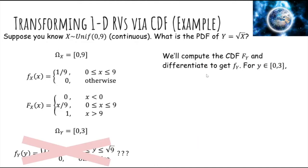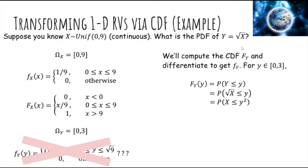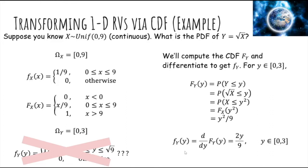Instead, we'll compute the CDF of Y and differentiate to get the pdf. For any Y in this range, we take the CDF at little y — the probability that Y ≤ y. Since Y is the square root of X, we plug that in and square both sides, getting P(X ≤ y²). This is just the CDF of X evaluated at y². We know the CDF of X, so plugging in y² gives y²/9. Then taking the derivative gives the pdf: 2y/9 for Y in that range.